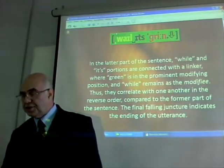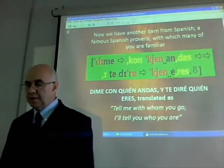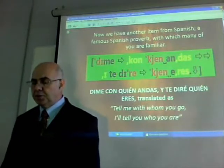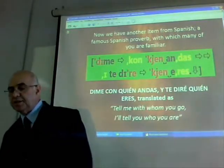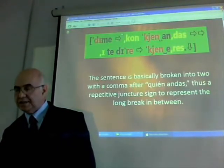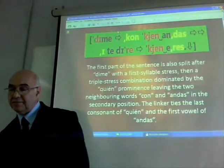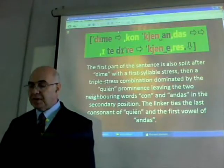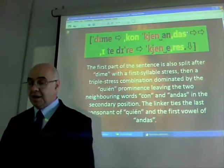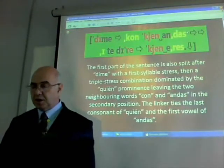'A twig must be bent': the final falling juncture indicates the ending of the utterance. Now we have another item from Spanish — a famous Spanish proverb already quoted, with which many of you must be familiar: 'Dime con quien andas y te diré que eres' — tell me with whom you go, I tell you who you are. The sentence is basically broken into two with a comma after 'quien andas.' A repetitive juncture is used to represent the long break. The first part, 'Dime con quien andas,' is also split after 'Dime,' with a first-syllable stress, then a triple stress combination dominated by the prominence of 'quien.'